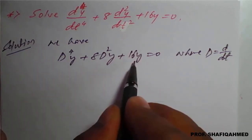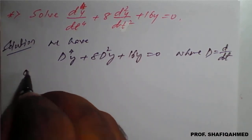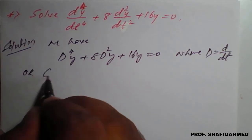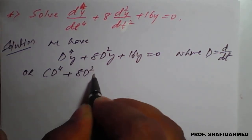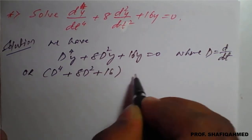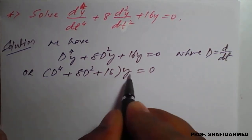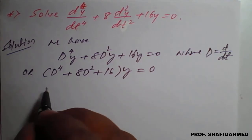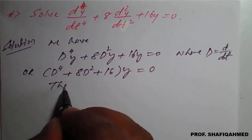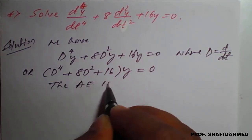Once we take y common, we get D⁴ plus 8D² plus 16, all of y equal to 0. Once we get in this form, we can write the auxiliary equation.